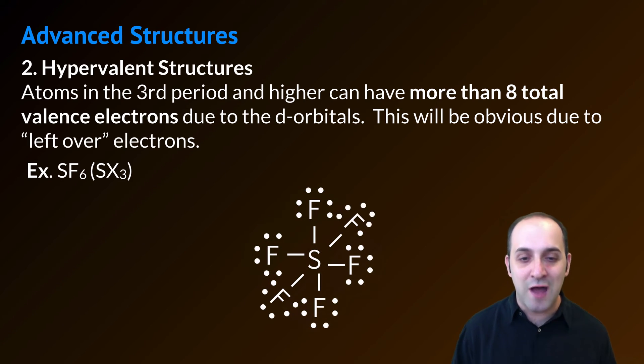This is what the Lewis electron dot structure would look like for sulfur hexafluoride. There are many other examples of hypervalent structures as well, but notice that in each case you're going to use an atom that's in the third period, something like phosphorus or iodine or even above the third period as well, though you'll generally only see them using atoms in the third period. Do you have any questions about hypervalent structures? If you do, now would be a good time to write them down before we move on to our third example.